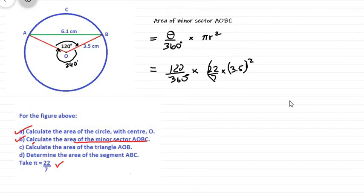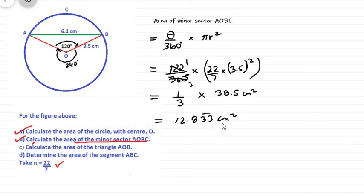Now, we already worked this out already, as noted before. And so this would actually work out to be one-third, because 120 goes three times into 360. And this will work out to be 38.5 centimeters squared. And 3 into 38.5, and that will give us 12.833 recurrent centimeters squared. So that's our answer for the area of the minor sector.